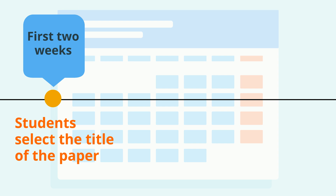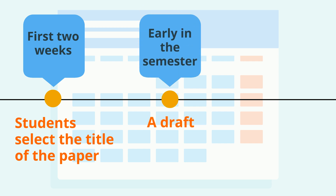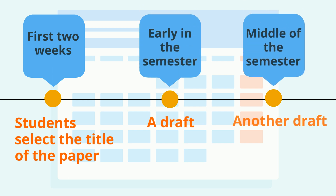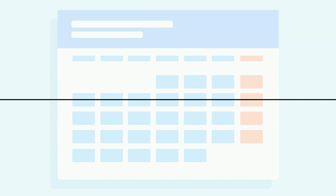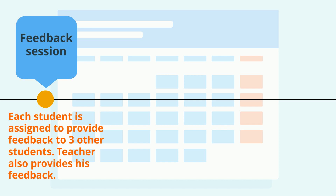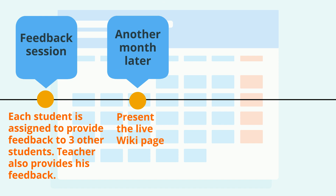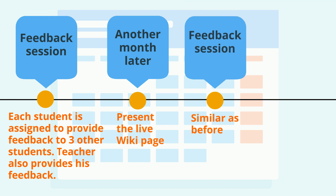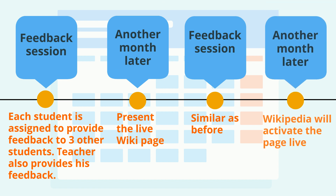In the first two weeks, students are expected to have the title selected. Then early in the semester, a draft will be required. In the middle of the semester, another draft — but this time worth more than a final exam — will be expected. Then there will be feedback sessions: each student is assigned to give three peer feedback responses, and Alex will also give his feedback. A month later, the student will present the pages live, and there will be another feedback session similar to before. Finally, it will take Wikipedia about a month to activate the pages live. We spend a class session discussing what makes a good Wikipedia page in their view.